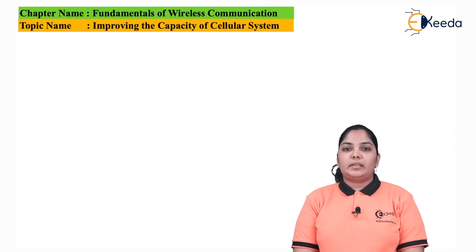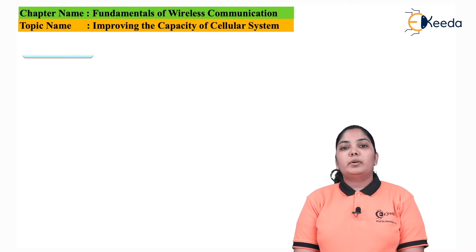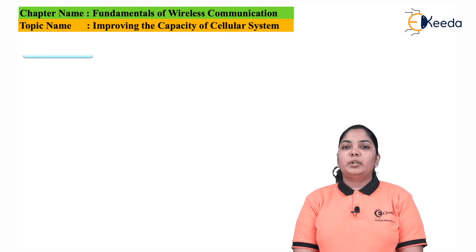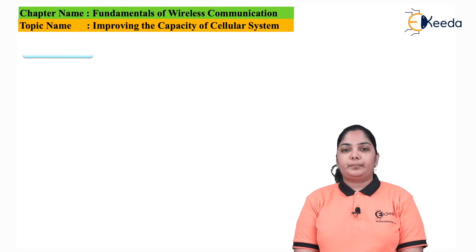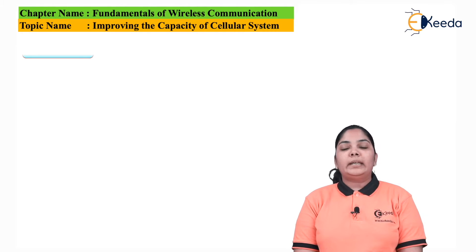In the next diagram, we can see how cell sectoring has been done. The upper diagram shows 3 sectors of 120 degrees each, and the lower diagram shows 6 sectors of 60 degrees each. Every sector has a directional antenna used for transmission and reception, and these directional antennas radiate only within their own sectors.